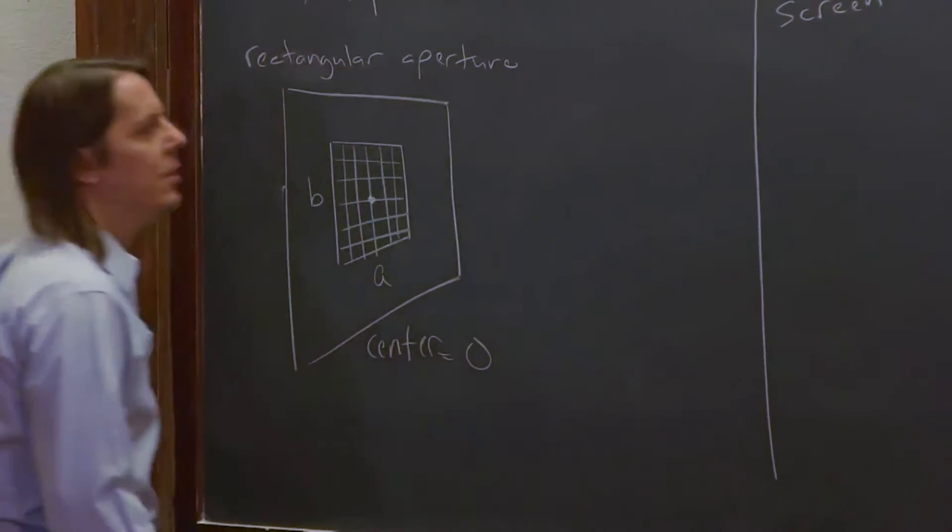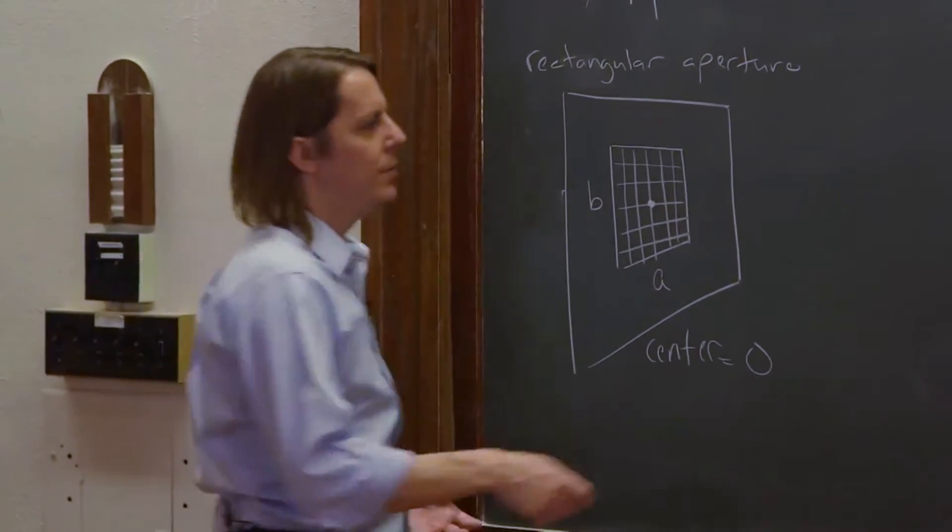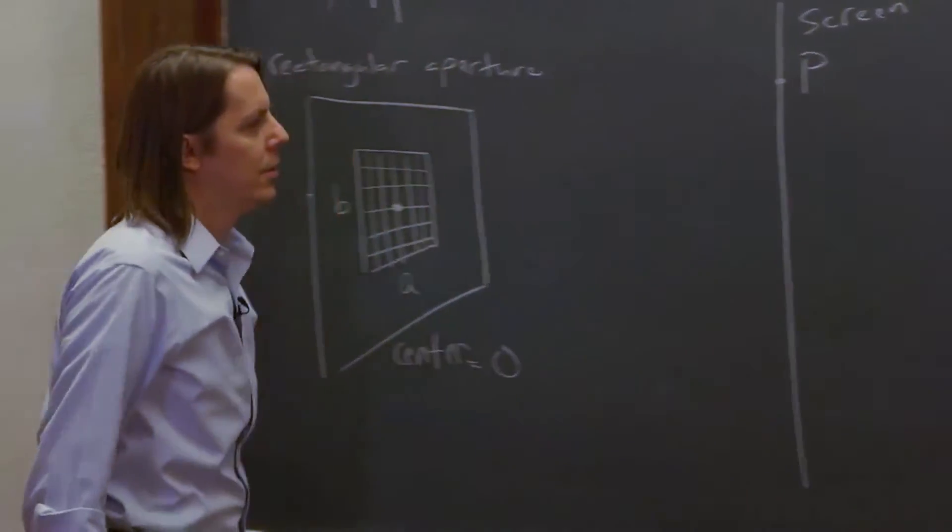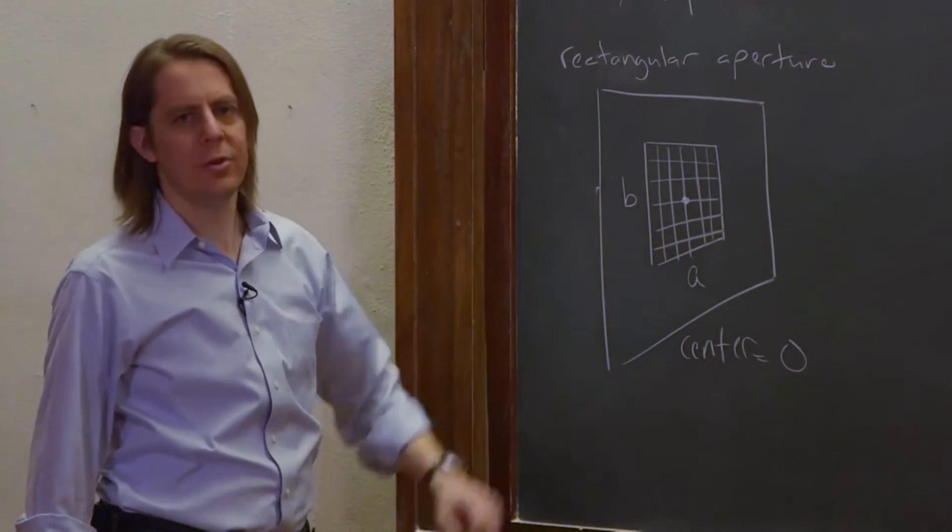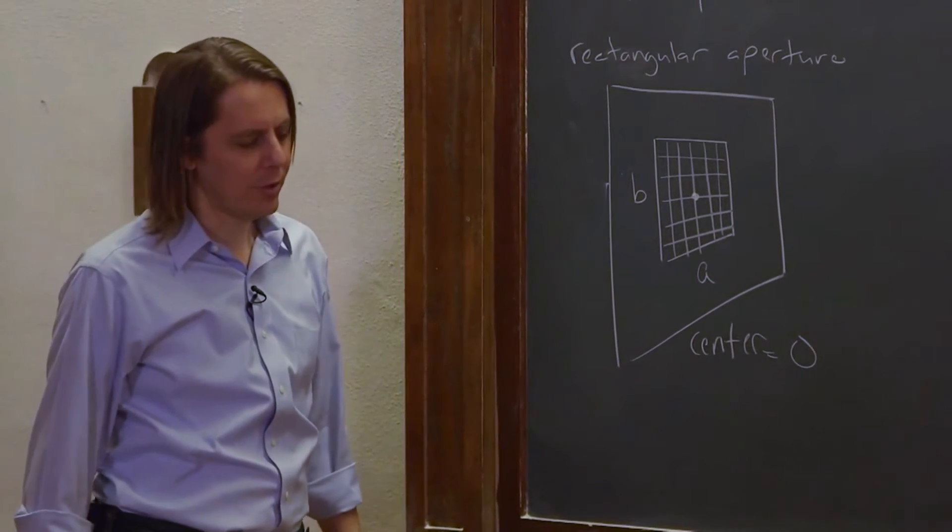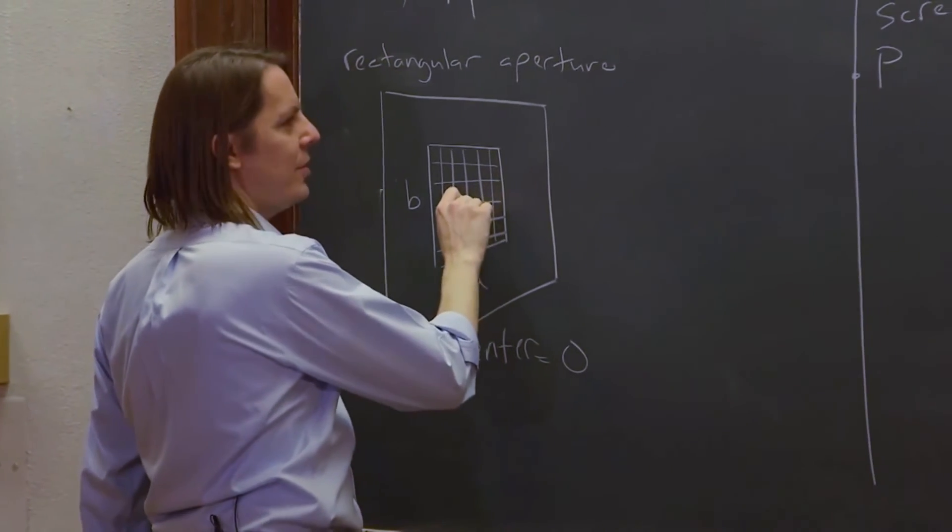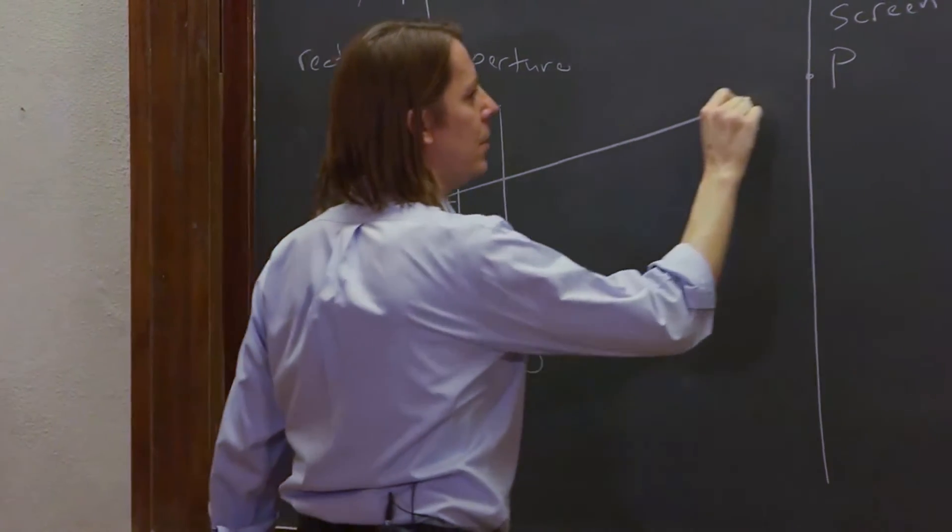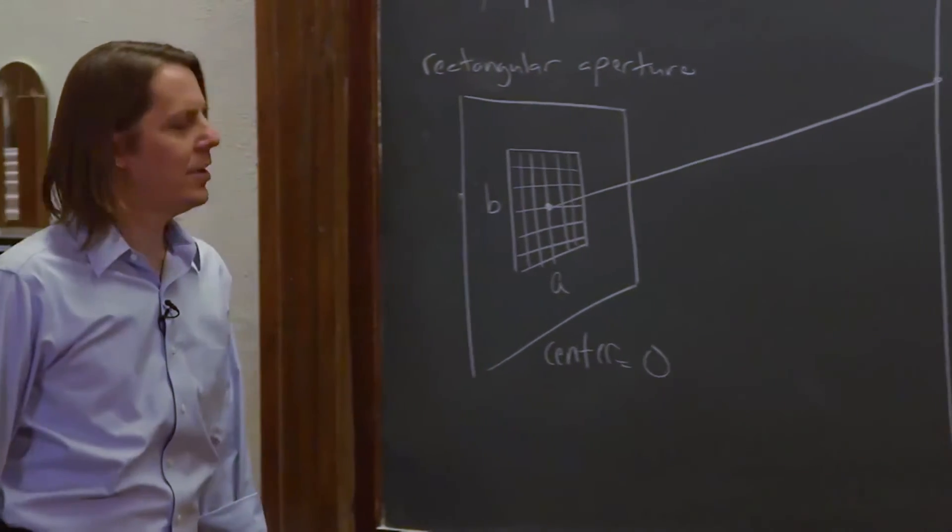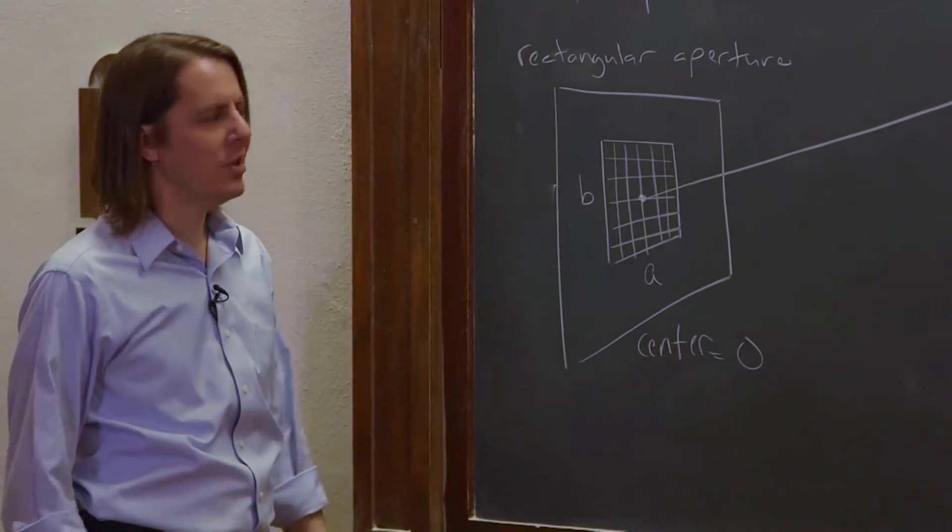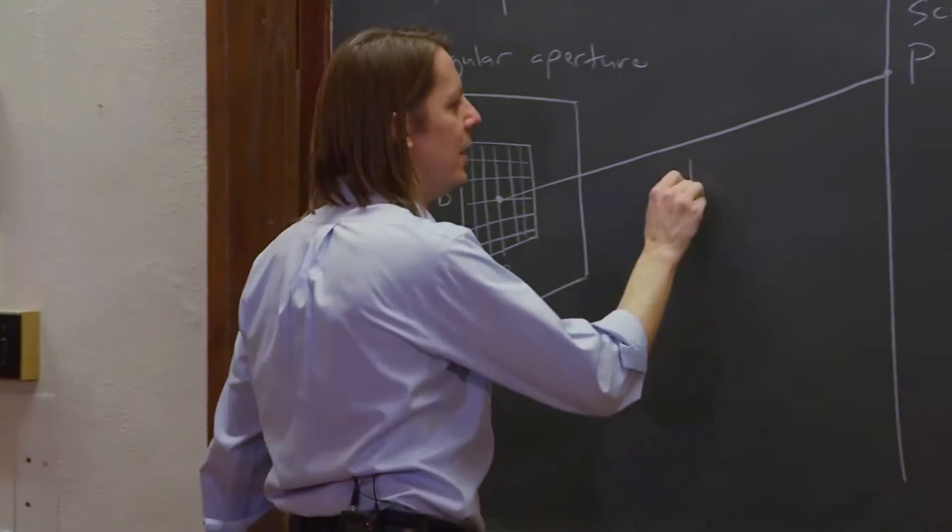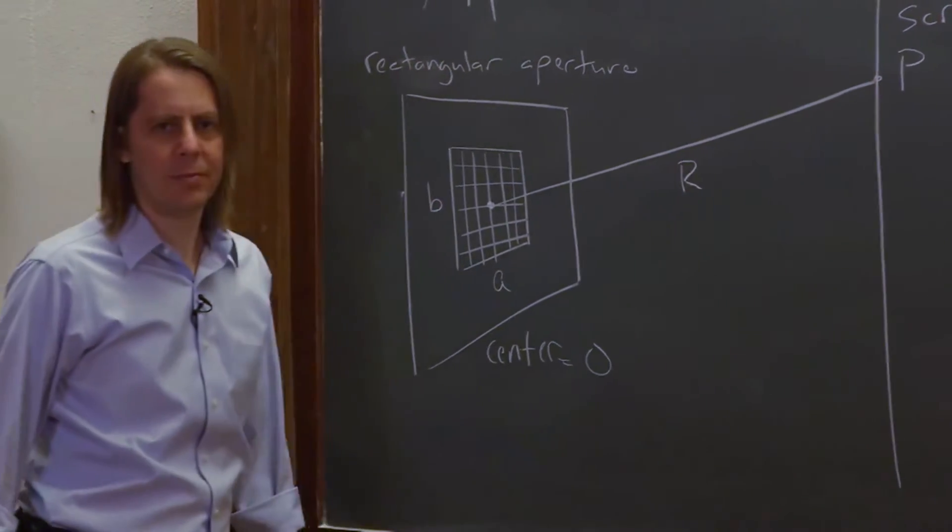Now, what we've got to do is, as always, figure out the field at point P by adding up all these little Huygens wavelets as they move around. So we're going to say, then, this ray from the center. Remember last time we called it R, and we said it's kind of special. So we made R a constant. This time, we're just going to come right out and say this is constant big R.